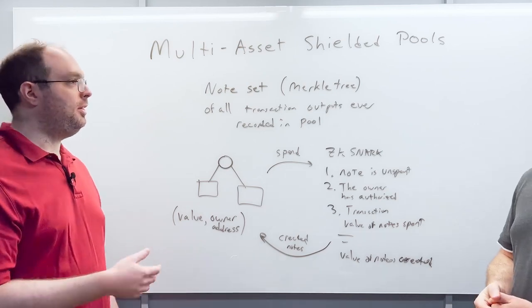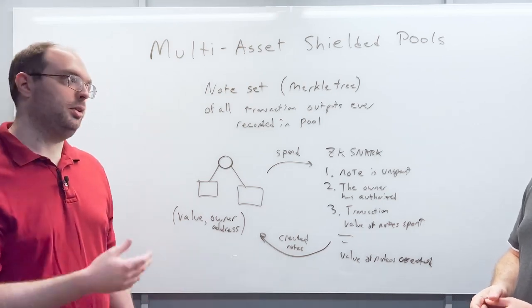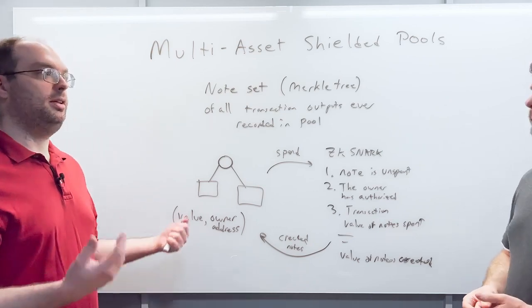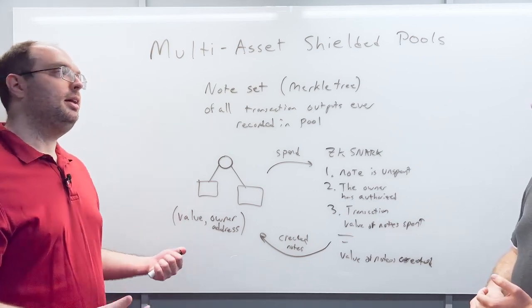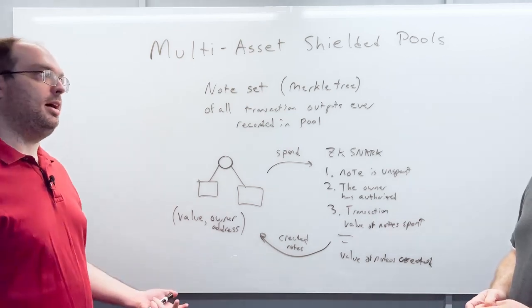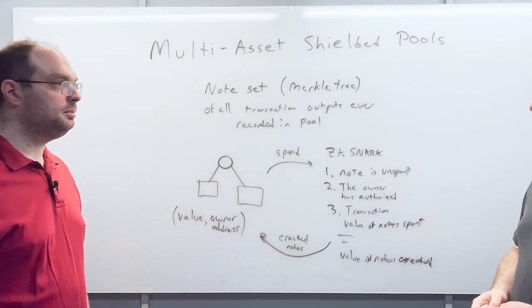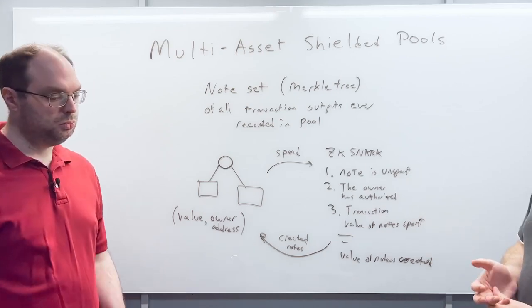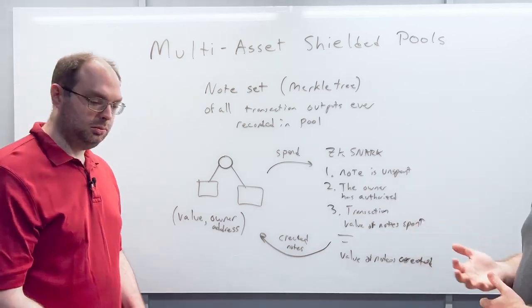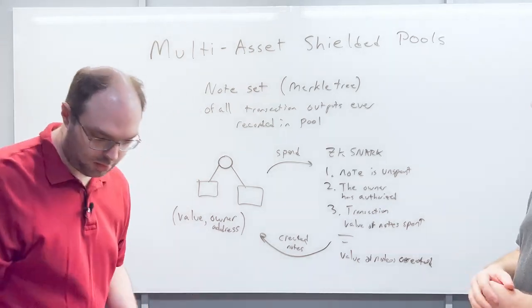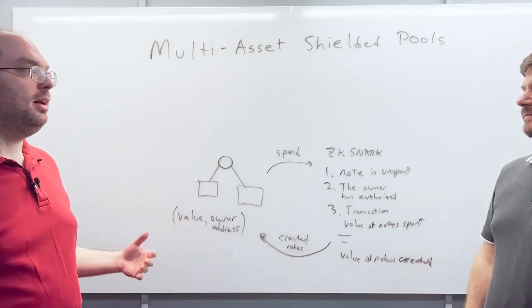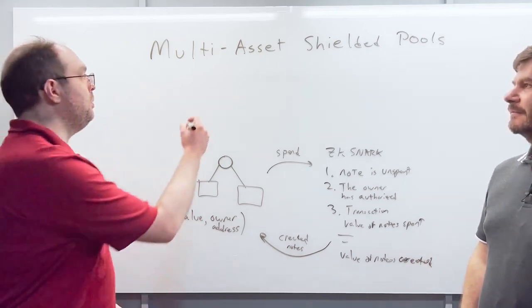Even if some token is traded only once per day and it's in the same shielded pool as a token traded a million times per day, they're still cryptographically indistinguishable from the outside. So the motivation is clear — but what are the challenges of creating multi-asset shielded pools?